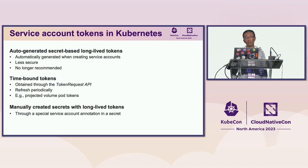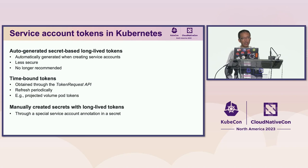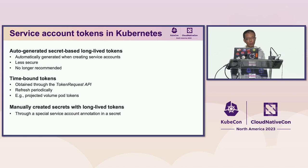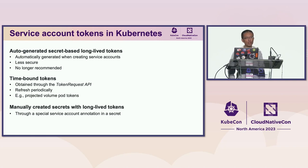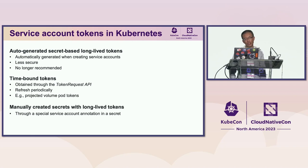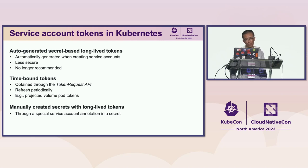Legacy non-expiring secret-based tokens are still common. Now, of course, we are moving to more dynamic and time-limited tokens obtained from the token request API. The application or Kubernetes will refresh and reload it automatically and periodically. One example is the bound service account token for pods. Finally, there are still some non-expiring tokens available if you really need them — you can manually create a secret and associate it with the service account. But unless it's absolutely necessary, non-expiring tokens are still not recommended.